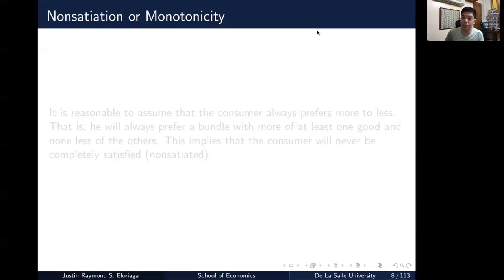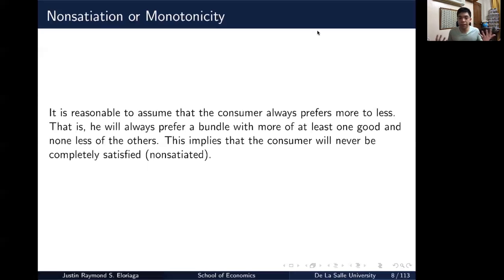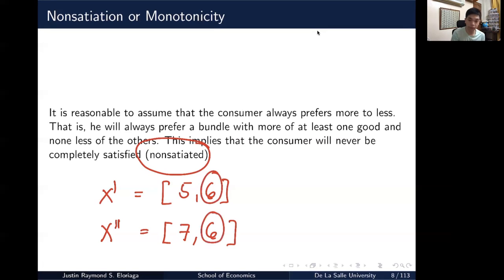The next axiom is called non-satiation or monotonicity. It means that it is reasonable to assume that the consumer always prefers more to less. That is, he will always prefer a bundle with more of at least one good and none less of the others. This implies that the consumer will never be completely satisfied, what we refer to as the term non-satiated. So say I was given a bundle wherein I have 5 units of X1, 6 units of X2, and I have another bundle which is 7 units of X1 and 6 units of X2. Note that both bundles have the same amount of X2. Therefore, by the assumption of non-satiation, I would obviously prefer the second bundle to the first bundle because it has more of at least one good with none less of the other.